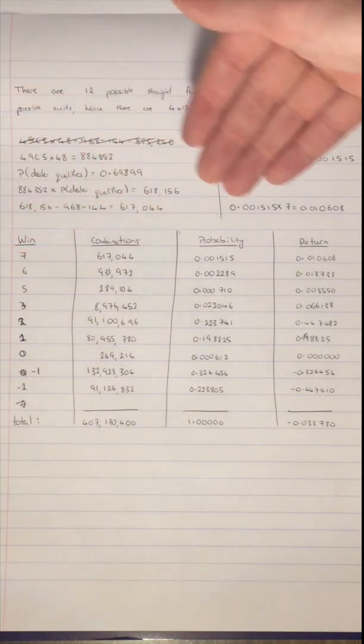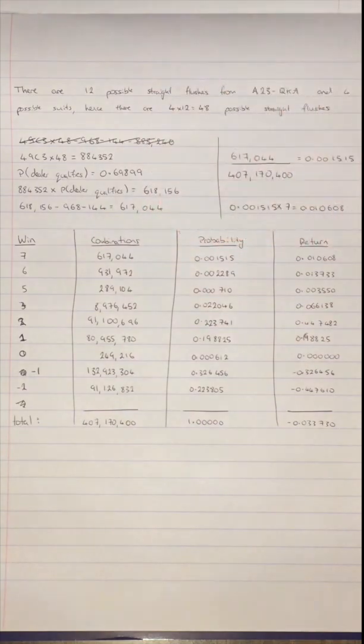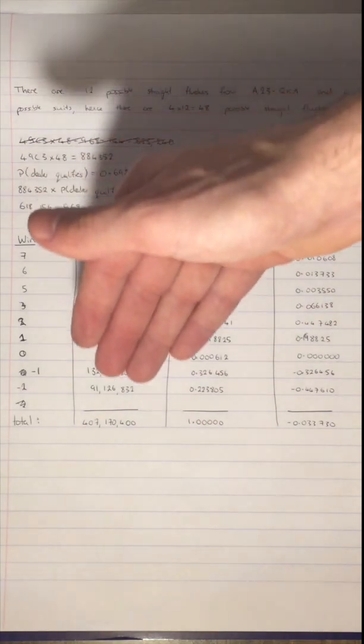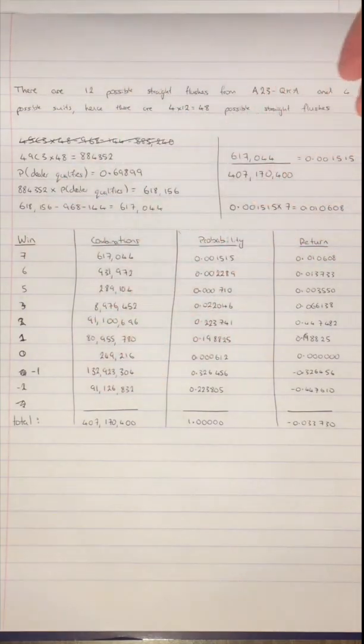Over here, we have the rest of the combinations which can be worked out in a similar manner and we can see that the total number of combinations of any hand is 407,170,400.